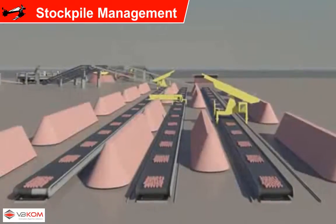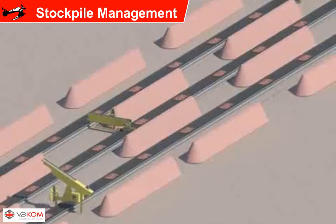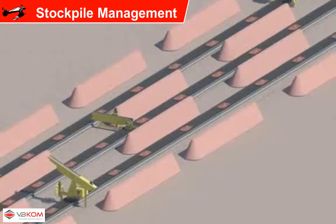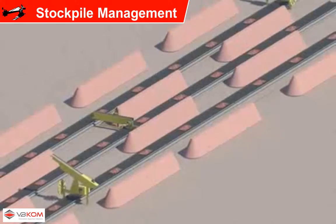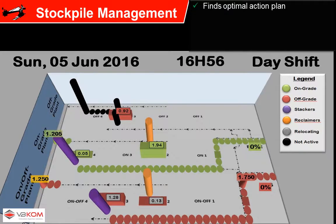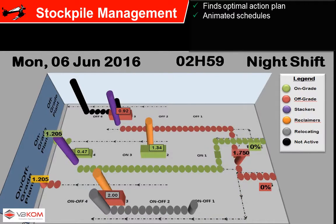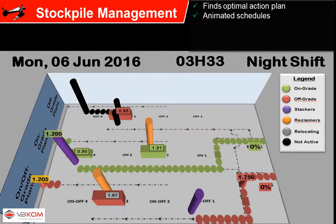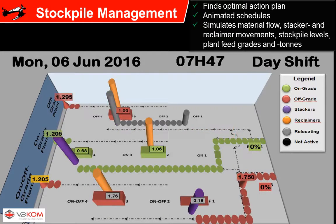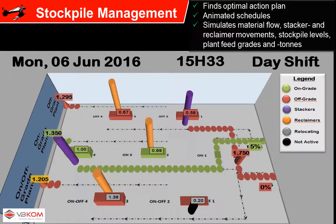VBCOM has successfully implemented a stockpile management system at Asmang's Kumani mine. The system generates the optimal stacking and reclaiming sequence. This animation shows an action plan generated for Kumani — the material flow on conveyor belts, stacker and reclaimer movements, stockpile levels and plant feed shown for the next 14 shifts.